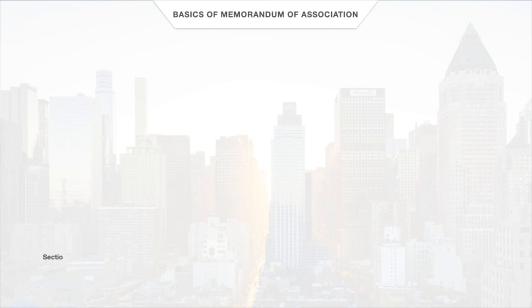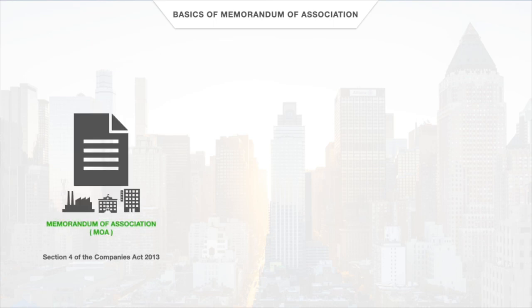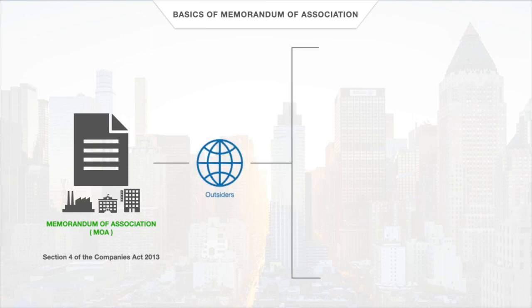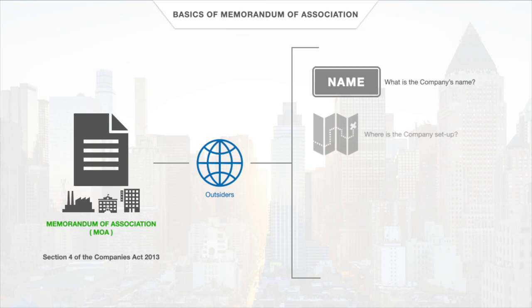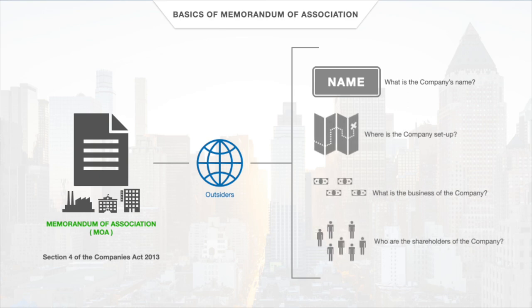Section 4 of the Companies Act 2013 primarily deals with the memorandum of association, which simply put is a document that gives an outsider basic information about the company — such as what is the name of the company, where is the company set up, what is the business of the company, who all are shareholders of the company, and so on.